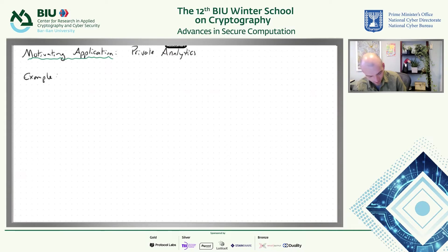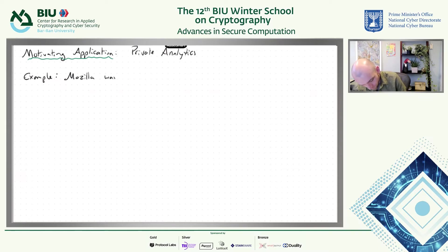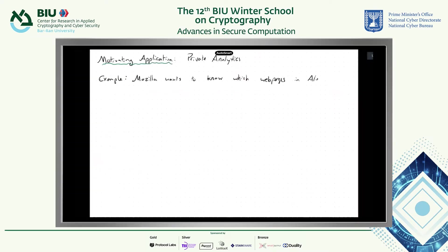The example application — related to one of the real world applications I've worked on — is that Mozilla, which makes the Firefox web browser, wants to know something about its users. For example, Mozilla might want to know which web pages in the Alexa top 10,000 list are popular homepages. They might want to optimize the browser for popular homepages, or know demographic information about their users.